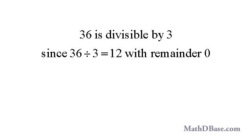One whole number is divisible by another if there is no remainder after dividing. If one number is divisible by another, then it is said to divide evenly by that number, or that the number divides it. For example, 36 is divisible by 3, since 36 divided by 3 equals 12, with 0 remainder.